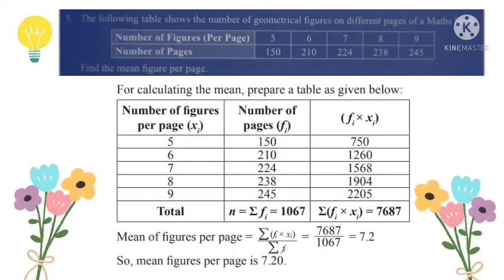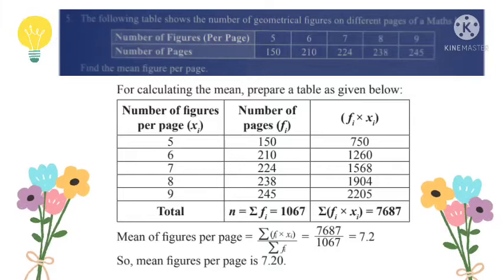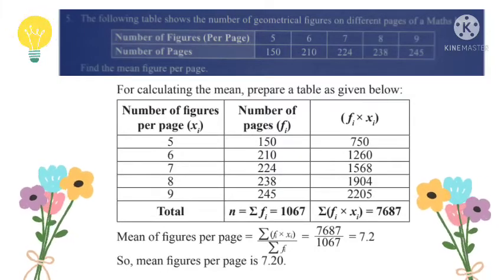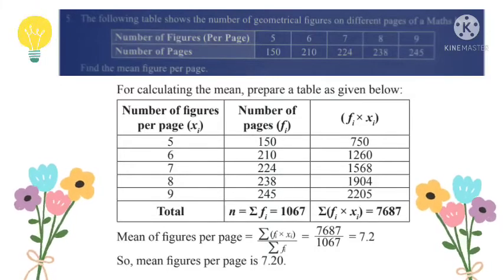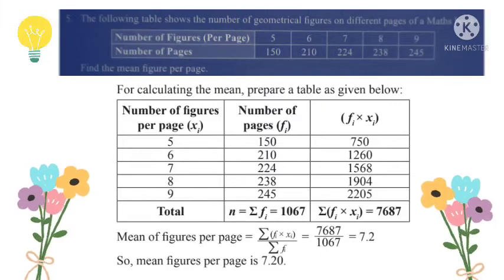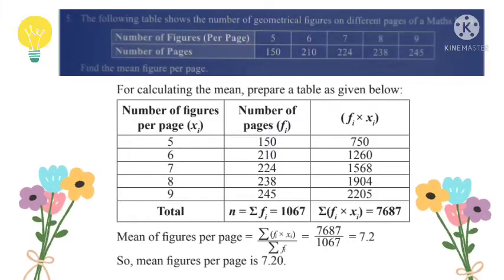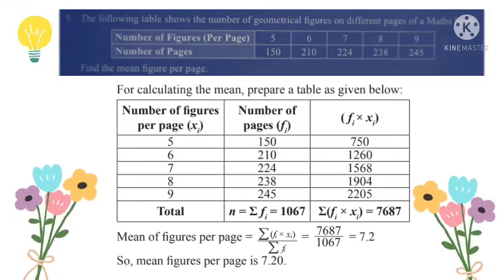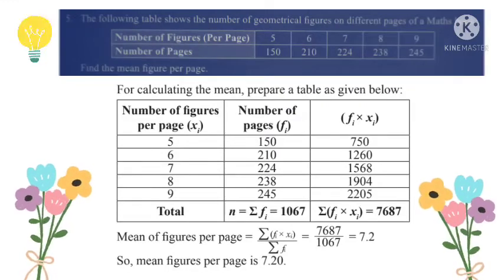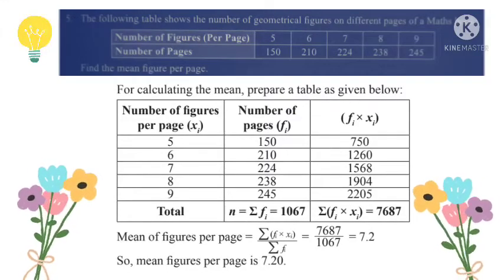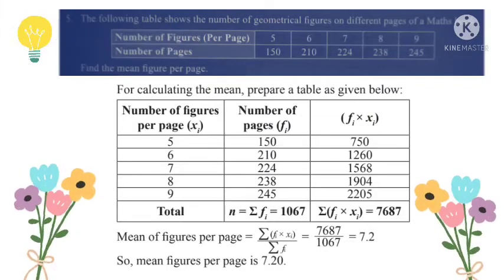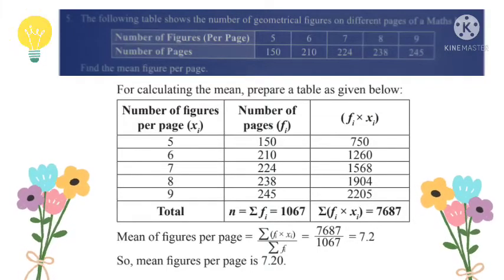Question number 5: The table shows the number of geometrical figures on different pages of a math book. When data is in tabular form, we use the appropriate formula. First, create two columns: number of figures per page and number of pages. Then create a third column for the product of these values.